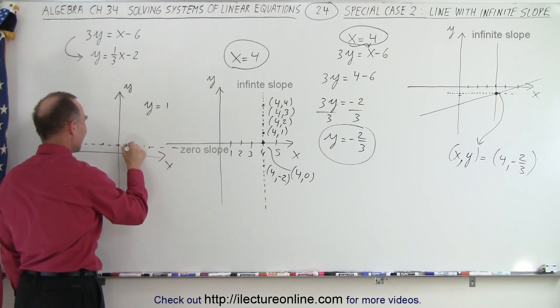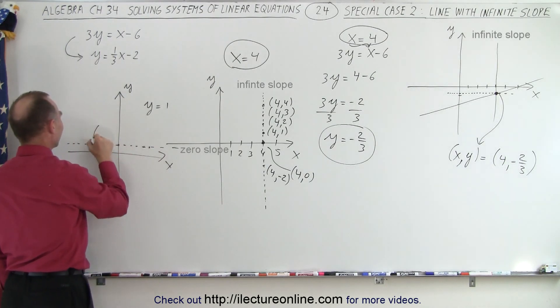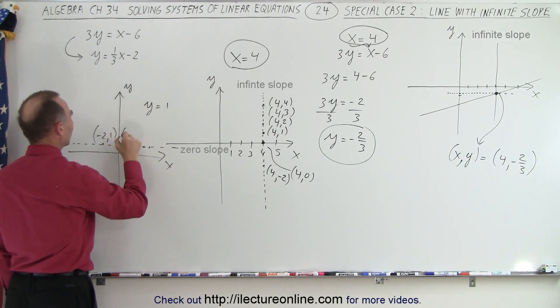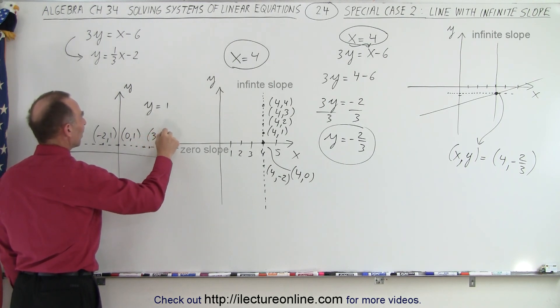It's y equals 1, not x equals 1. So that means that this here would be, for example, negative 2 and 1. This point right here would be the point 0 and 1. And over here would be the point 3 and 1.